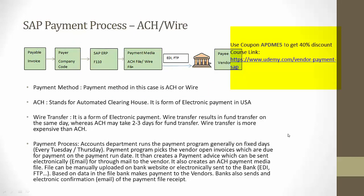The next payment method could be ACH or wire transfer. Both of these are modes of electronic fund transfer. Wire transfer is fast and takes around one day, whereas ACH takes around two to three days from the date of initiation.